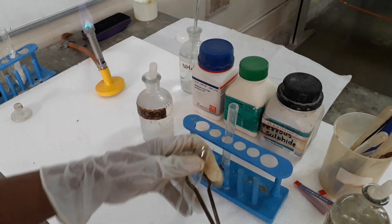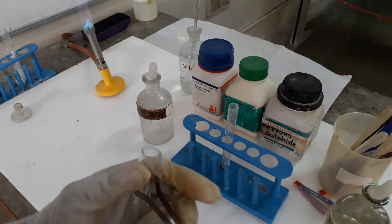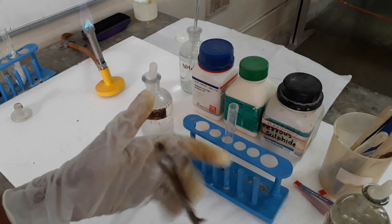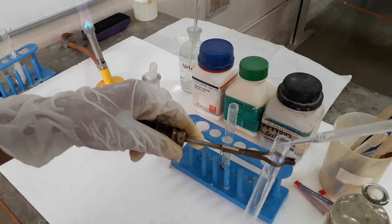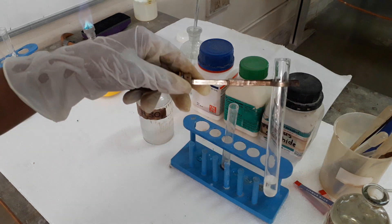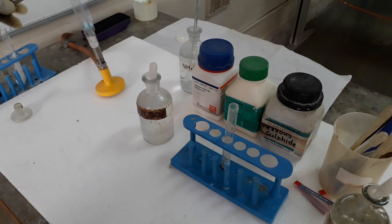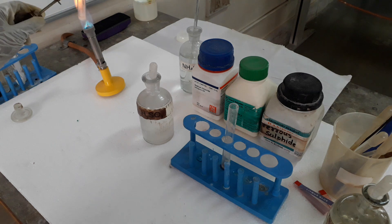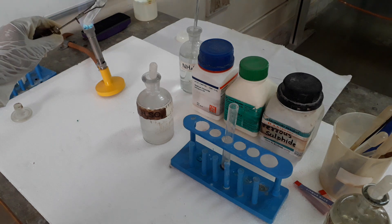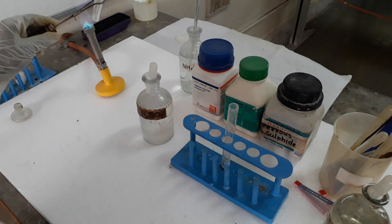Now the second one we are taking is sodium nitrate. For sodium nitrate, we have to add concentrated sulfuric acid and then heat it. When we heat it, we will see some brown fumes coming out from the test tube. Look at this.